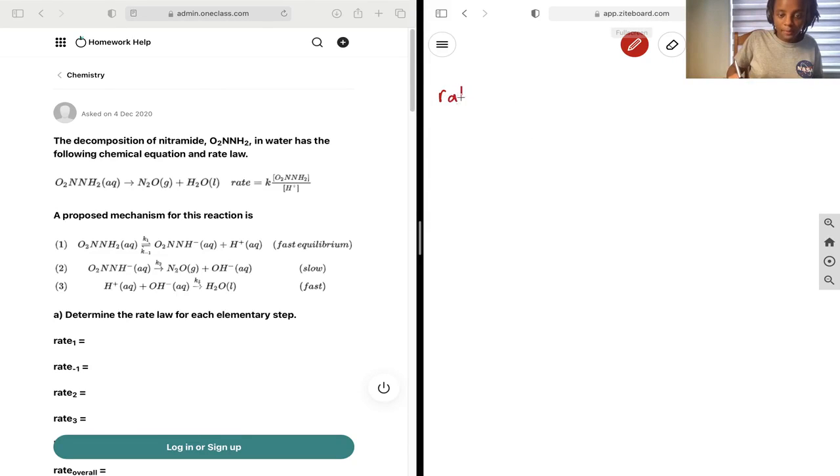It's called the molecularity, so it's going to be k1 multiplied by O2NNH2, because that's the only reactant in that case.